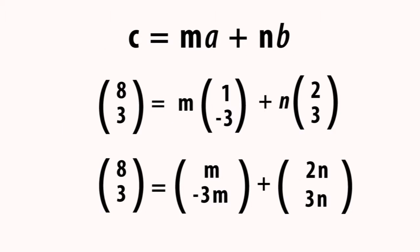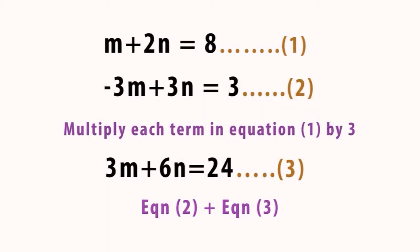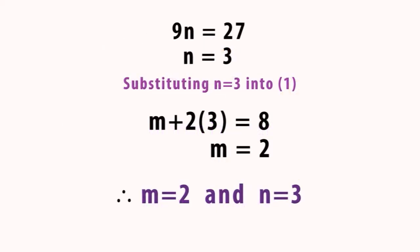So, M + 2N = 8, giving you equation 1. Okay. And -3M + 3N = 3, giving you equation 2. Okay. You solve this. We have the elimination method and substitution method. Okay. But I'm using the elimination method. Thank you. You multiply each term in equation 1 by 3. So, you get 3M + 6N = 24, giving you equation 3. And equation 2 plus equation 3. So, 9N = 27, dividing 27 by 9. You get N to be 3.